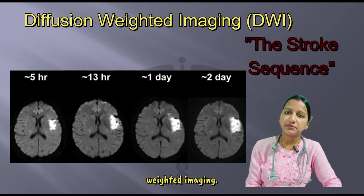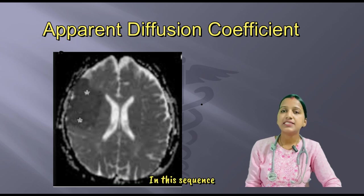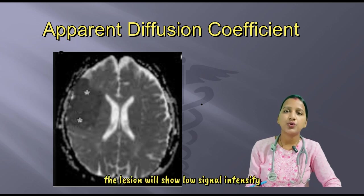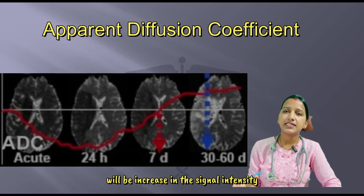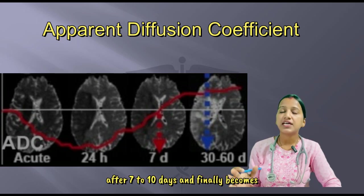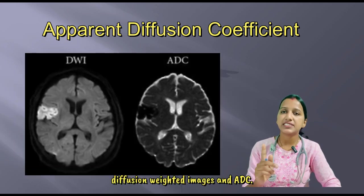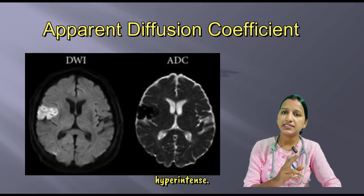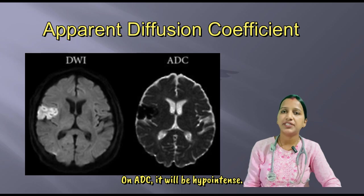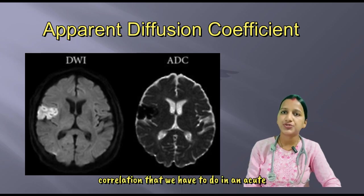After diffusion-weighted imaging, correlation with ADC — that is, apparent diffusion coefficient — is essential. In this sequence, the lesion will show low signal intensity with maximum at 24 hours, and then there will be an increase in signal intensity. After 7 to 10 days, it finally becomes bright in the chronic stage. On diffusion-weighted images, an acute stroke will be seen as hyper-intense; on ADC, it will be hypo-intense. This is the most important sequence correlation to perform in an acute stroke.